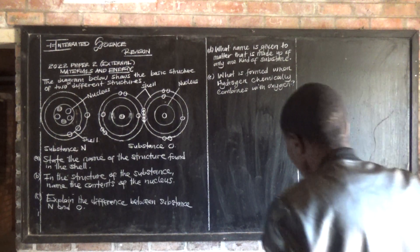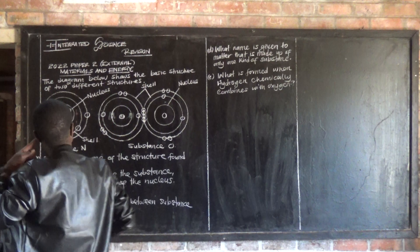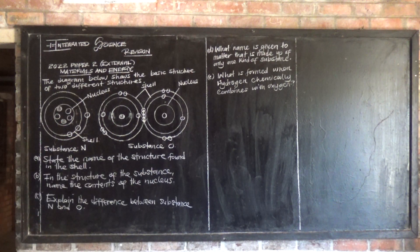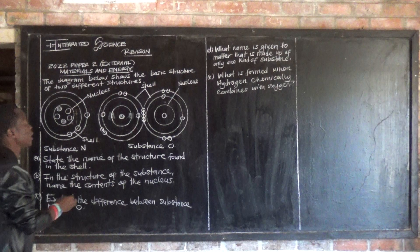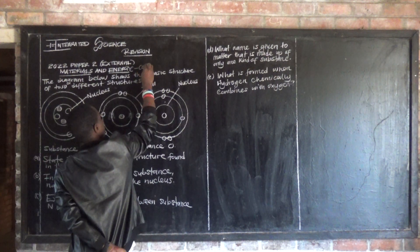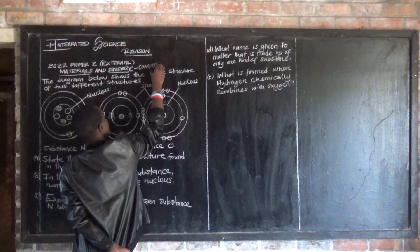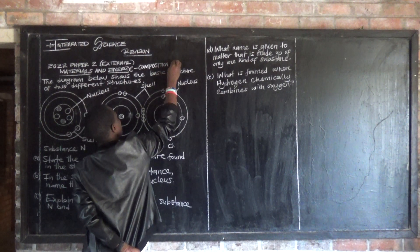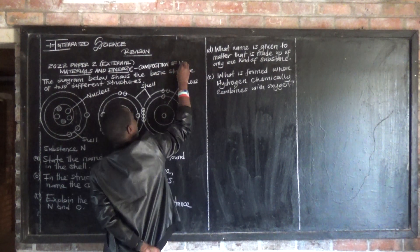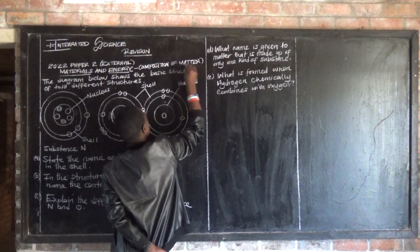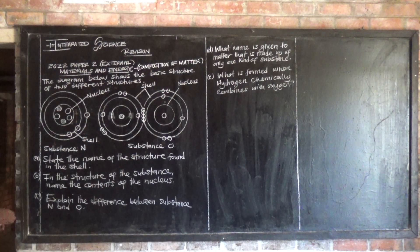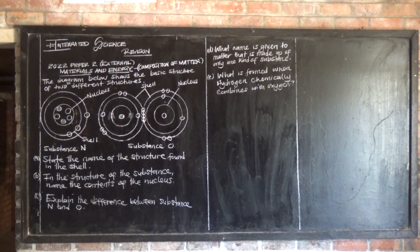So now let's proceed. We are still looking at 22 Paper 2 external. This section is on materials and energy, specifically on a subtopic called composition of matter.